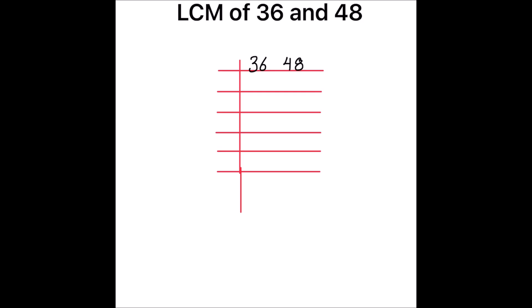The first prime number is 2. Both numbers are even and are easily divisible by 2. Dividing 36 by 2: 2 times 18 is 36, giving us 18. This becomes 16 — 2 times 8 is 16. Now we will divide 48: 2 times 2 is 4, and 2 times 4 is 8.